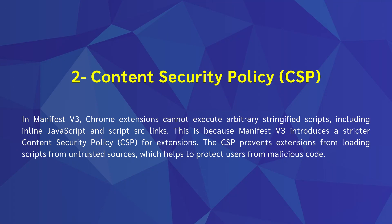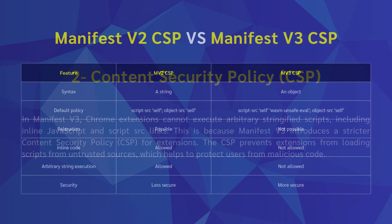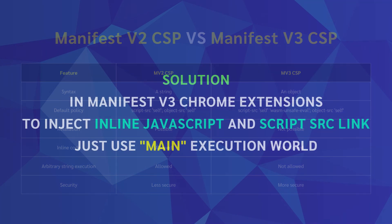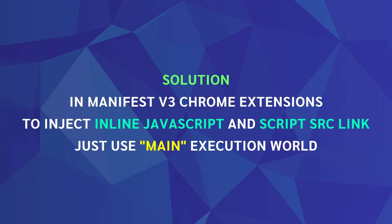Content Security Policy or CSP is a security mechanism that allows web developers to control how their content is loaded and executed. It can prevent attacks including XSS, clickjacking, and resource exploitation. A Chrome extension using Manifest version 3 has a stricter CSP than Manifest version 2. When using Manifest version 2, you don't see refuse script execution errors — these errors only occur in Manifest version 3 because of stricter CSP and execution world. In Manifest version 3, all we need is to set the execution world to main.